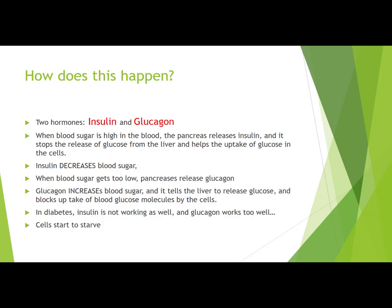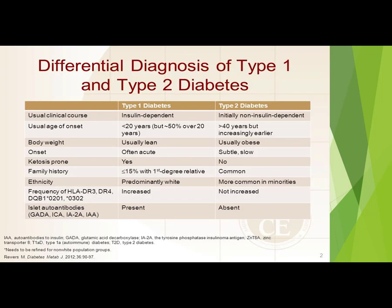Two key hormones to understand are insulin and glucagon. When blood sugar is high, the pancreas releases insulin, which stops glucose release from the liver and helps glucose uptake into cells, ultimately decreasing blood sugar. When blood sugar gets too low, the pancreas releases glucagon, which increases blood sugar by telling the liver to release glucose and blocking uptake into cells. In diabetes, insulin isn't working well enough and glucagon is working too much, causing cells to starve.